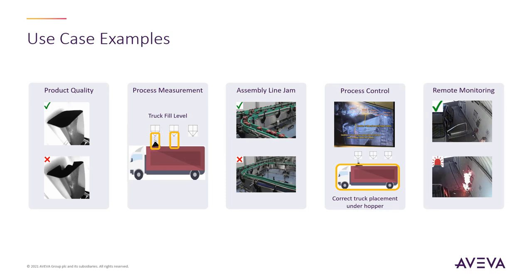There are a variety of use case examples encompassing quality, operations and maintenance applications. For quality applications, we can use cameras to identify quality issues or to ensure quality control — for example, to determine the quality of the fluid in water treatment. In operations, we can use infrared or thermal cameras to determine visual anomalies, for example detecting an assembly line jam.